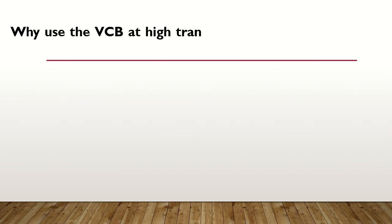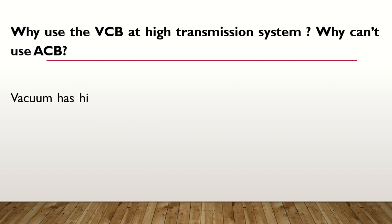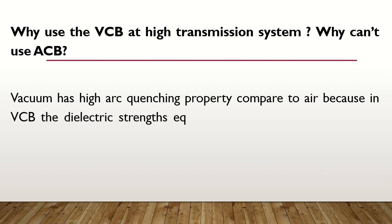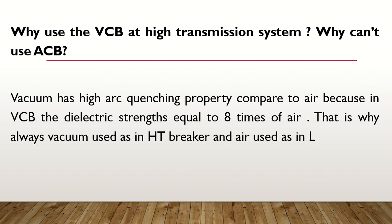Next question: why do we use VCB — vacuum circuit breaker — at high transmission systems? Why can't we use ACB — air circuit breaker? Vacuum has high arc-quenching property compared to air. In a VCB, the dielectric strength equals eight times that of air and has high arc quenching. That is why vacuum is always used in HT breakers and air is used in LT — low tension — breakers.